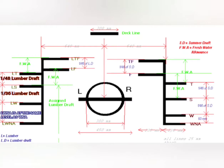Here is the difference between the two load lines. On the left-hand side of the Plimsoll mark is the timber load line and on the right-hand side is the normal load line. On the right-hand side, the Summer load line aligns with the Plimsoll mark. From there, it is 1/48 of the summer draft to the Winter load line and the Tropical load line mark. The Winter North Atlantic mark is 50mm below the Winter mark.